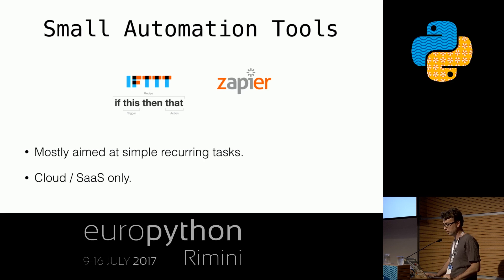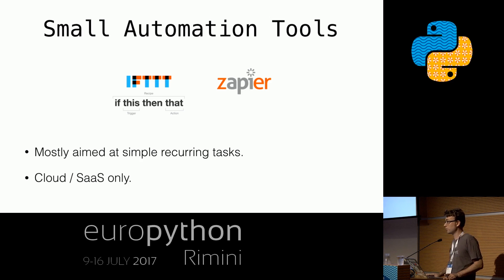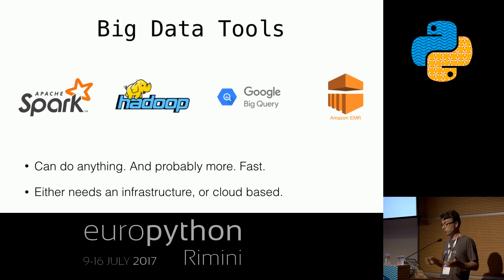There are other scales of tools to transform data. You may know IFTTT or Zapier, which are cloud-based SaaS tools for small automations — obviously these won't run on your laptop. And there are huge data tools like Spark and Hadoop. Either you need a big infrastructure to start, or you're using a cloud-based thing and face the problem of working without the cloud and avoiding vendor lock-in.